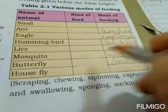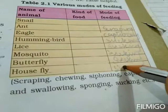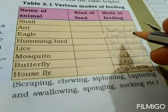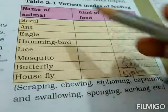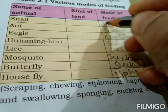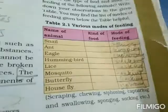House fly — siphoning. Snail — siphoning. The kind of food for each animal we will study further.